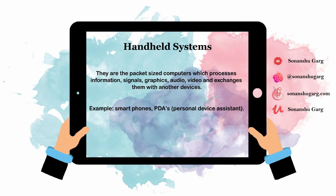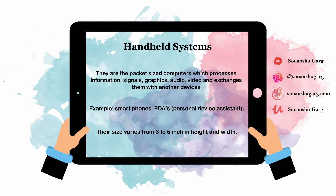Another example is PDAs — personal digital assistants. Their size varies from 3 to 5 inches in height and width. Though I know this information is not entirely accurate these days, since smartphones are now larger than 5 inches, it is a generalized size measurement that they vary from 3 to 5 inches.